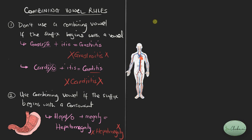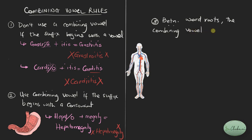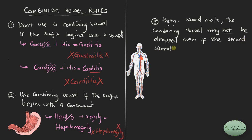The next rule is rule number three. It's important to contrast rule number three with rule number one. Remember that in rule number one, we said don't use a combining vowel if the suffix begins with a vowel. In rule number three, we are dealing with a situation between a word root and another word root. Between two word roots, the combining vowel may not be dropped — even if the second word root begins with a vowel.